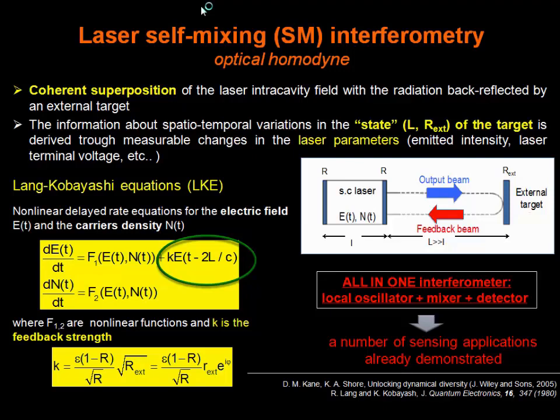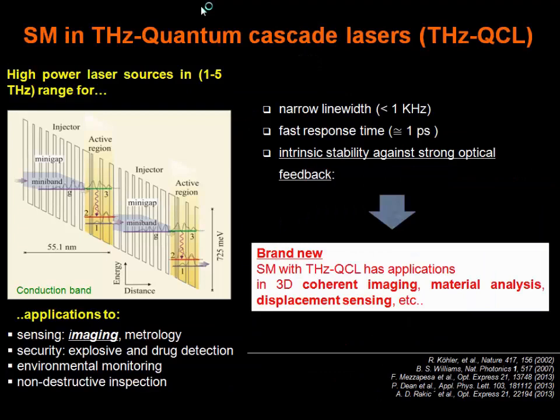For example, the modulus square of the field, which is proportional to the intensity emitted by the laser, or the carrier density, which is linked to the voltage modulation across the laser terminals. And since a self-mixing interferometer is only one device — a local oscillator, a mixer, and a detector at the same time — there are already a number of applications in sensing, like vibrometry, target tracking, motion sensing, etc., as described in the book cited in this slide.